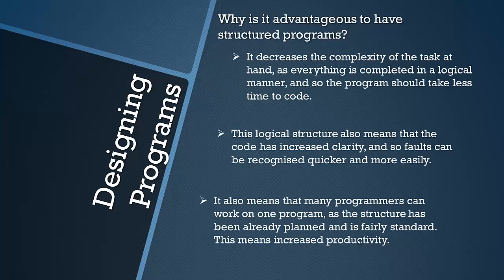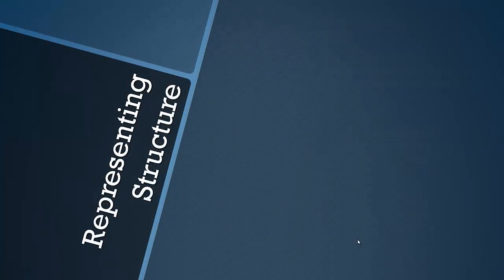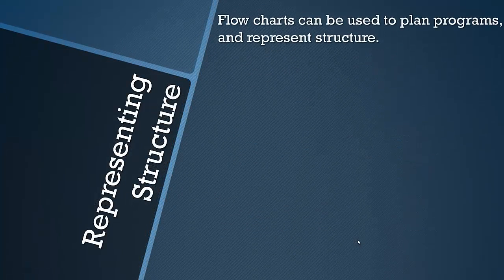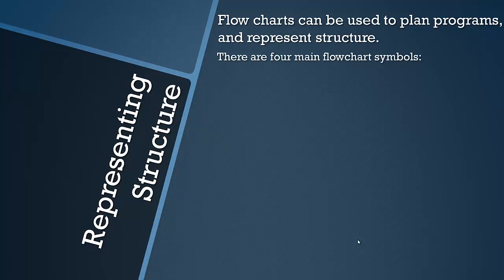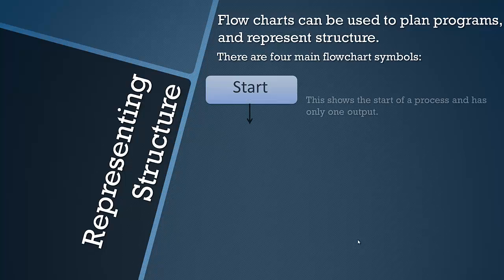And this whole situation means increased productivity. Alright let's have a look at those three flow types, well let's not actually know, we'll do that next but let's have a look at flowcharts. Structure can be represented and programs can be planned using flowcharts and there are four main flowchart symbols you need to know.